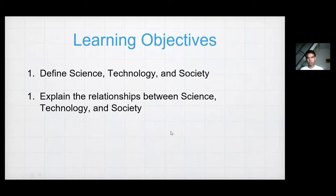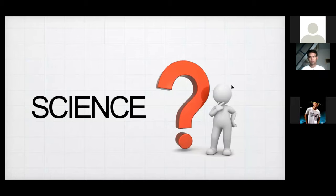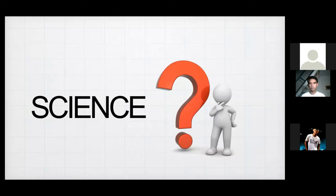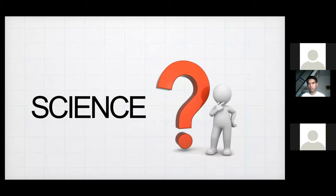First, we need to define what is science. How can you define science in one word? Any word that came into your mind when you heard the word science? Students responded with: experiment, the state of knowing, knowledge, systematic, chemicals, physics, research, theories. Those are the words that came into your mind when we heard the word science.